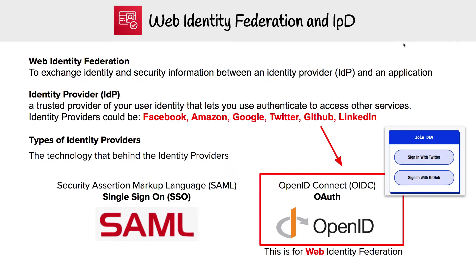An identity provider is a trusted provider for your user identity that lets you authenticate to access other services. An identity provider could be Facebook, Amazon, Google, Twitter, GitHub, or LinkedIn. You commonly see this on websites where it allows you to log in with a Twitter or GitHub account — that is an identity provider.